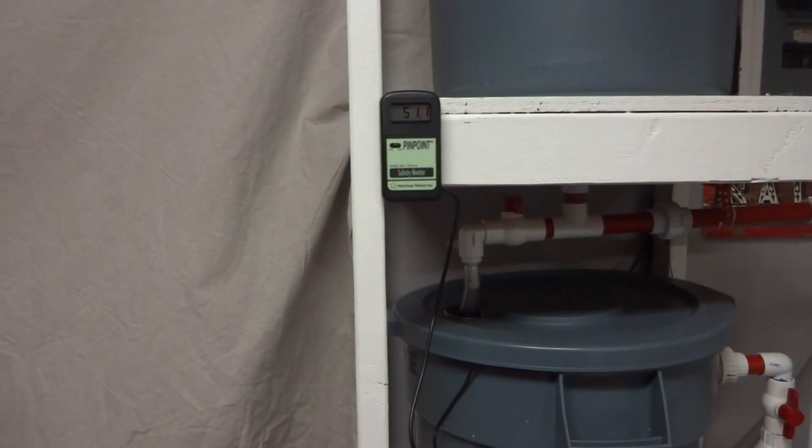Now I have a quick reference or a quick way to reference what's going on in the bin whether I need to add salt or add more RODI water to bring down the salinity.